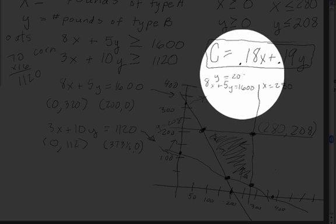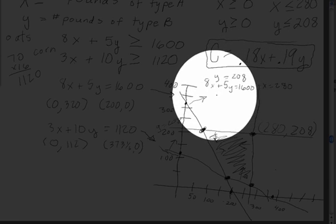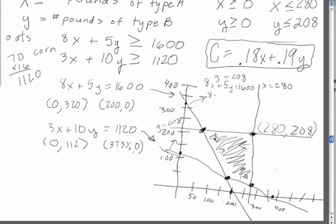So you're basically going to use substitution here. You're going to get 8x plus 5 times 208 equals 1,600. Now take 5 times 208, you're going to subtract that from 1,600.